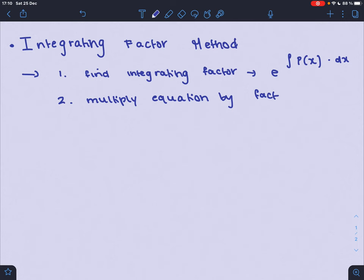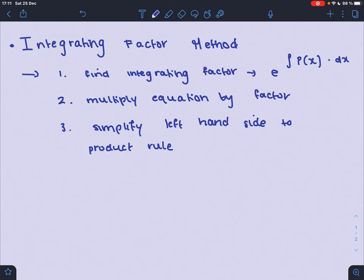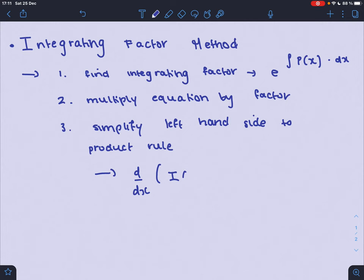Step three, simplify left-hand side to the product rule. So it goes to d/dx of I, so first function of x times y, another function of x. And fourth, integrate both sides with respect to x.